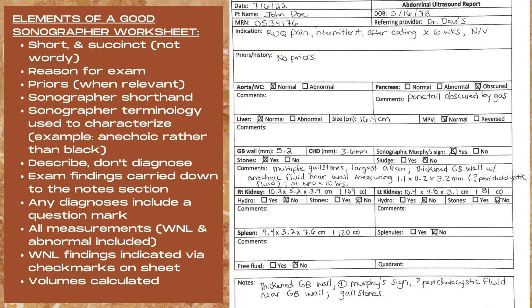Another important element to include is to describe any regions that were not completely evaluated on the ultrasound and the reason why they were not completely visualized. You also want to ensure that when you do run across pathology, you're using correct sonographer terminology to characterize your findings — for example, use the word anechoic rather than the word black — and you want to describe rather than diagnosing.